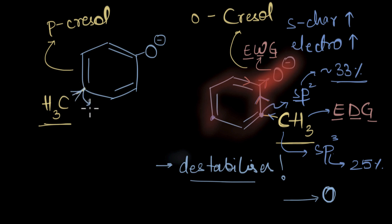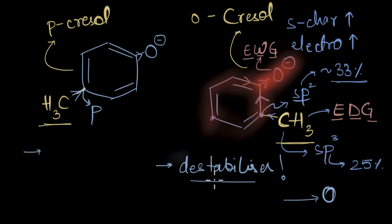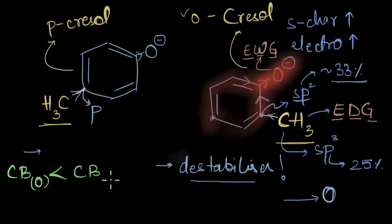In para-cresol, the methyl group — an electron-donating group — is at the para position, the farthest away from the oxygen atom. This means the destabilization caused here will be far less than in ortho-cresol. So we can say the conjugate base of ortho-cresol is less stable than the conjugate base of para-cresol, which means ortho-cresol is less acidic than para-cresol.